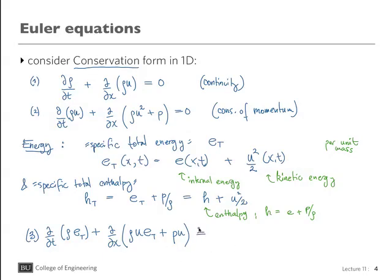But it's also equal to d/dt, this term doesn't change, rho e total, but the other term we can write in terms of the enthalpy as d/dx rho u h total. So we have these two forms of the energy equation.